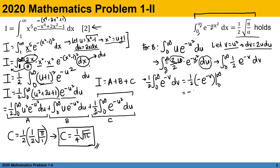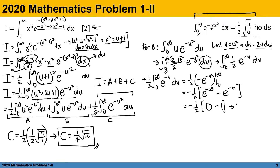So we have negative one half of e to the negative infinity minus e to the negative 0. This is negative one half of 0 minus 1, which equals negative one half of negative 1, giving us B equals positive one half.